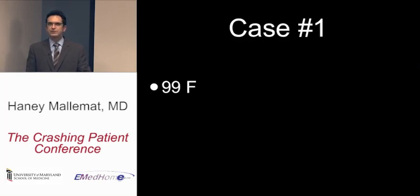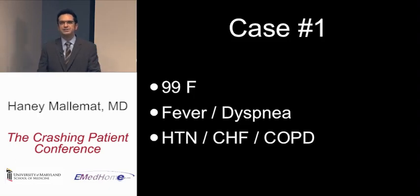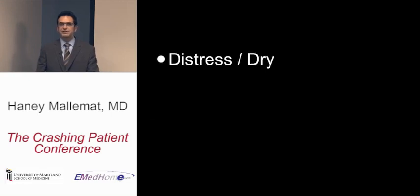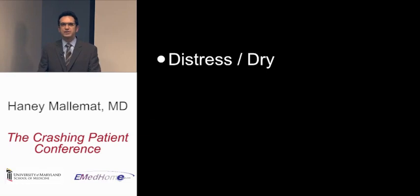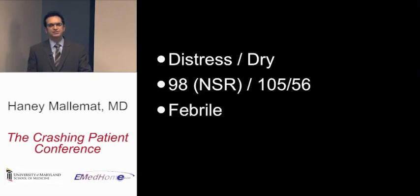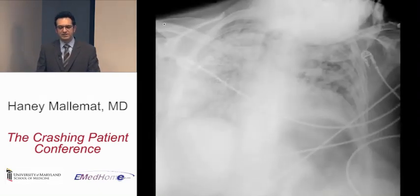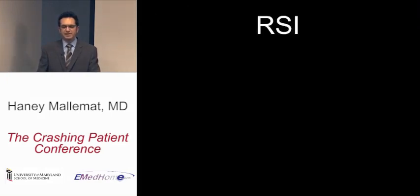This is a 99-year-old female coming in with fever and dyspnea, who has a history of hypertension, congestive heart failure, and COPD. She is clearly in respiratory distress, and just by looking at her and her mucous membranes, she's clinically dry. Her heart rate is 98 in normal sinus rhythm. Blood pressure is 105 over 56. She is febrile. Her SAT is 83% on room air. Here's your chest x-ray — and right off the bat, you know it's time to intubate.